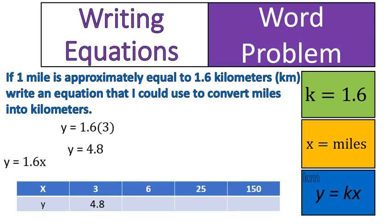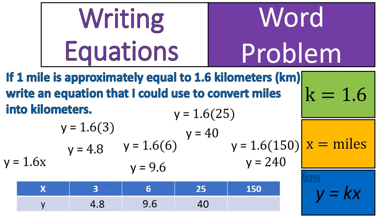So in other words, 3 miles is equal to 4.8 kilometers. 6 miles is equal to 9.6 kilometers. 25 miles would be equal to 40 kilometers. And 150 miles would be equal to 240 kilometers.